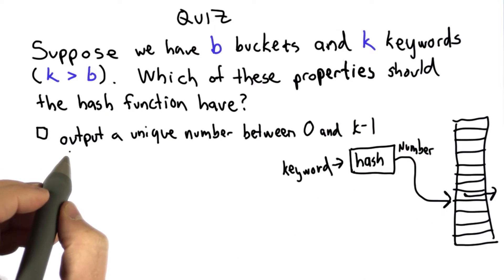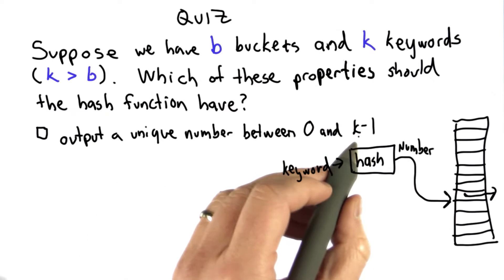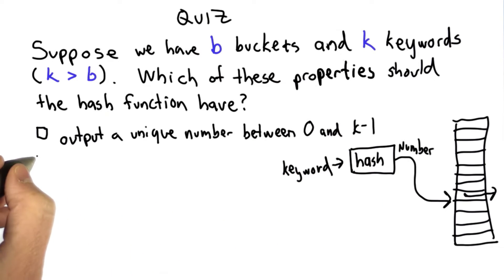The first choice is output a unique number between 0 and k-1, so each keyword maps to its own output number.